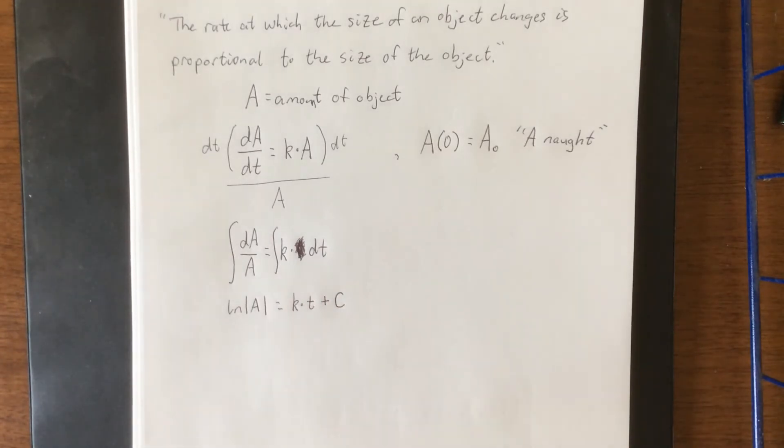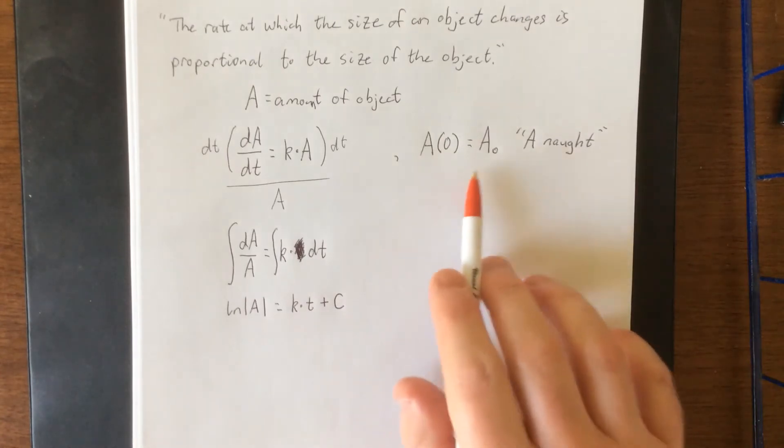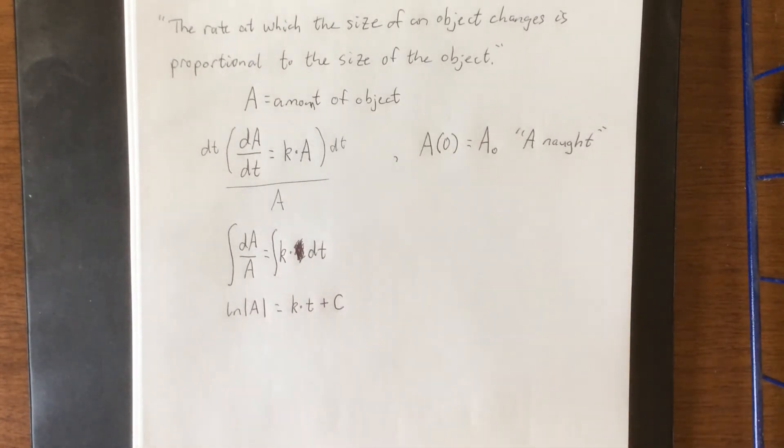It should just be k times dt so that at the next step that's where we're going to see k times t. Then we can also plug in a plus c. Now the options we have are we can immediately solve for the plus c using the initial condition, or we could just keep solving for capital A.